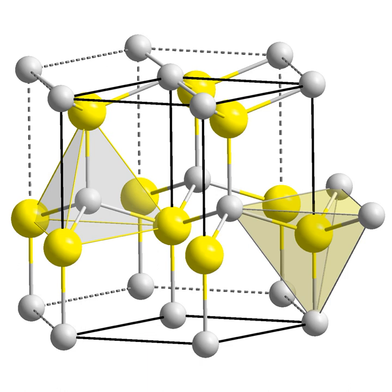Structure. BeO crystallizes in the hexagonal wurtzite structure, featuring tetrahedral Be2+ and O2- centers, like lonsdaleite and wurtzite boron nitride, with both of which it is isoelectronic.